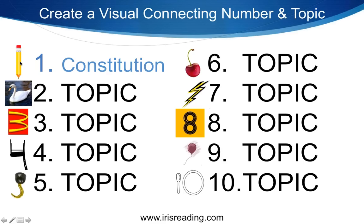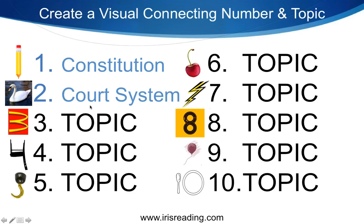Section one — pencil — was a nice coincidence since it's about writing. She initially imagined Thomas Jefferson writing the Constitution with a pencil, but I told her there's no exaggeration. So she pictured Thomas Jefferson writing the Constitution with a giant novelty pencil from a gift shop. Section two was about the U.S. court system — federal, state, and local courts. She pictured three swans of different sizes swimming around, representing the three levels.